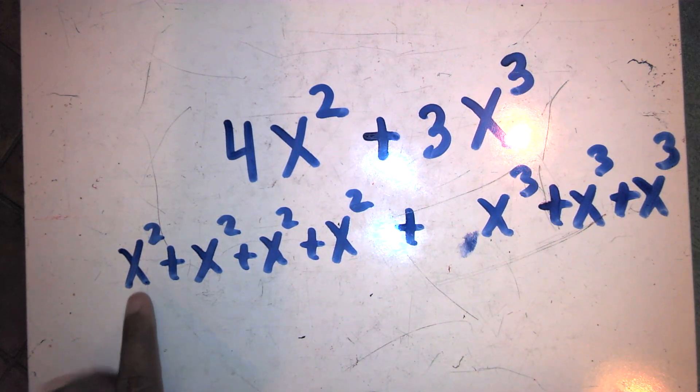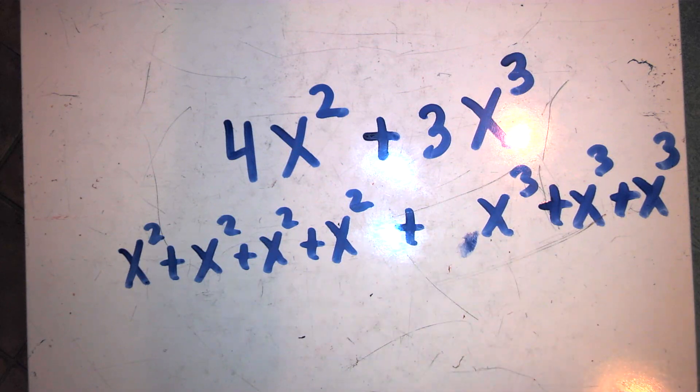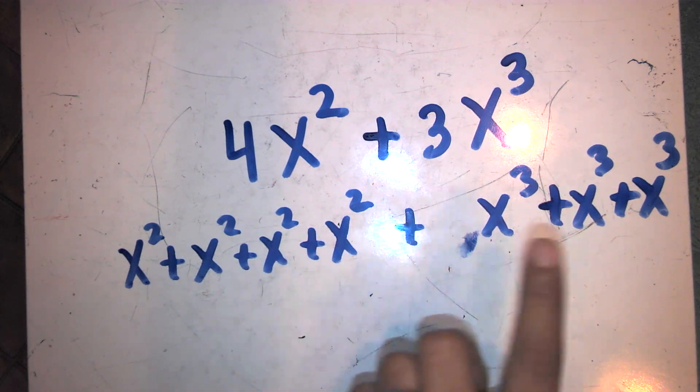Notice, I have here four groups of x squares and three groups of x to the thirds. There are different types of groups.